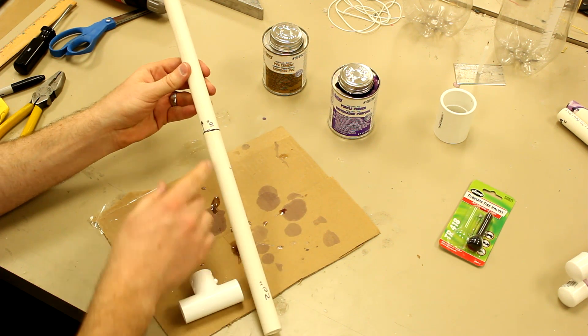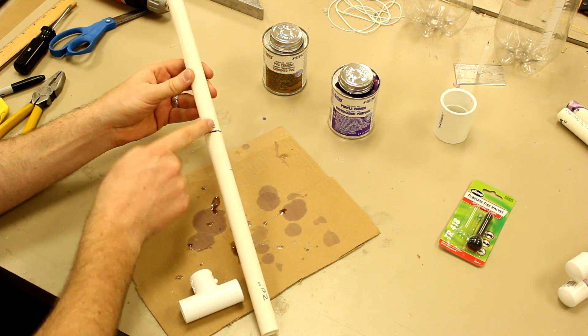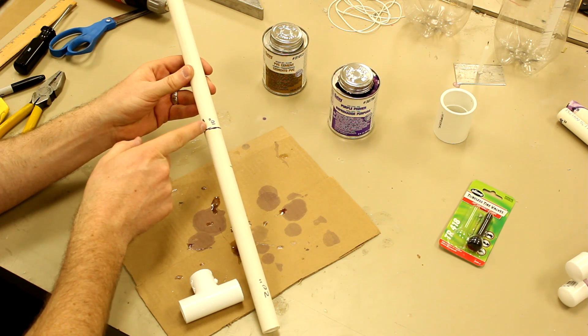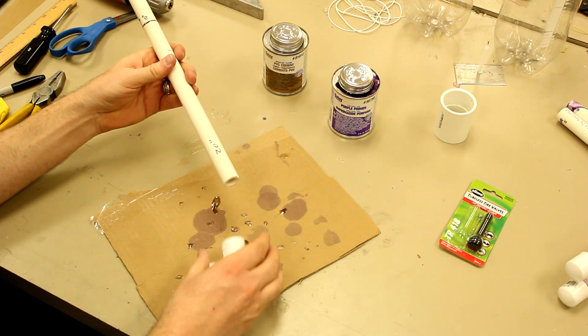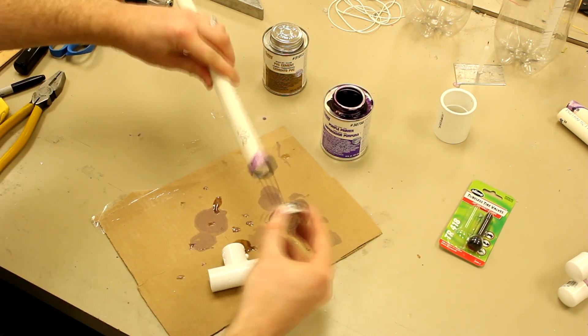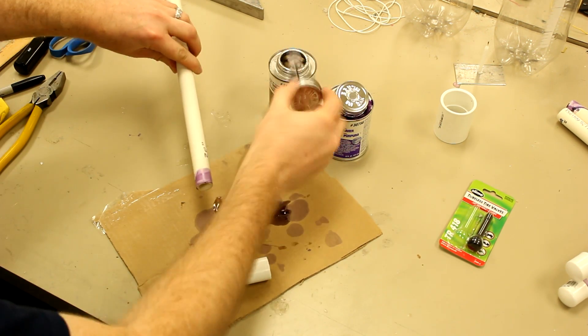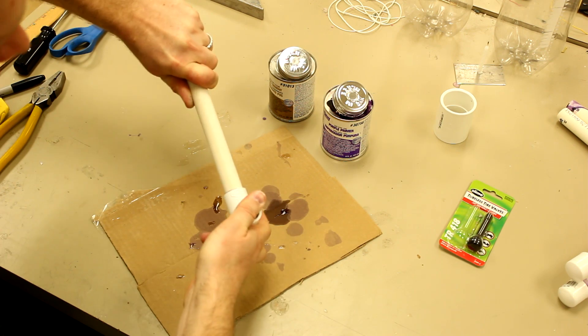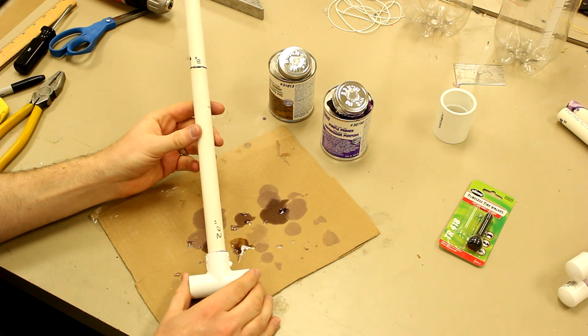You want to make sure that the end from which you measured 10 inches is upward. And then we're going to glue it down to this third tee that we had. And that's our main launch rail.